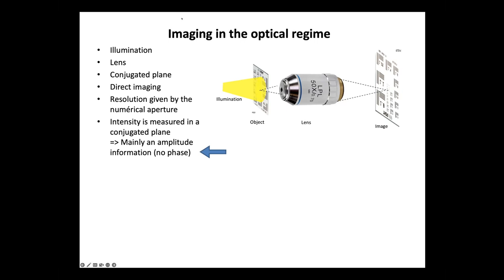Microscopy had a great success for imaging, but what is sure is that it has this weakness: the inability to image the phase. This is basically what was interesting for me when I started to hear about ptychography — this ability to actually get the phase information that could be extended to the optical range.